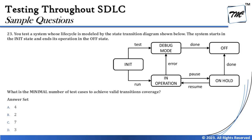We must stress on the key phrase: minimum number of test cases for valid transitions coverage. We are only worried about valid transitions, not paths or N-switch coverage. The goal is to cover every single transition in the minimum number of test cases. The first test can go: Init → Debug Mode → Done → Off. The second test: Init → In Operation → Debug Mode → Off, covering the 'run/error/done' path.